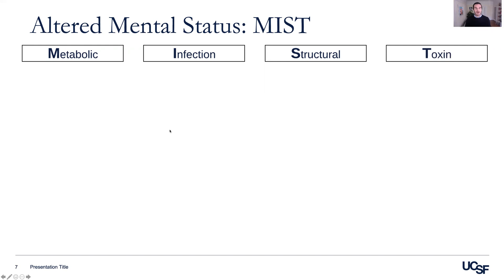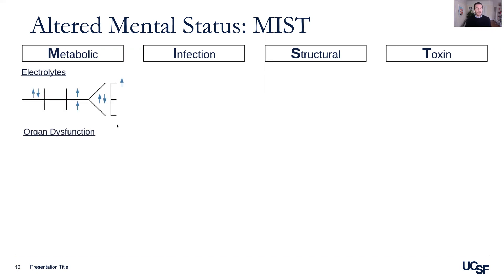Within the metabolic category, we can have electrolyte abnormalities and organ dysfunction as causes of altered mental status. You can see a BMP lab skeleton here that notes which electrolyte abnormalities can lead to an encephalopathy. These include hyper- and hyponatremia, an elevated BUN or creatinine level, hyper- or hypoglycemia, as well as hypercalcemia.